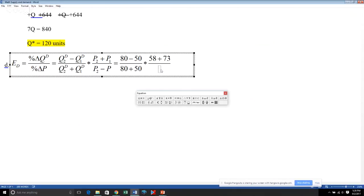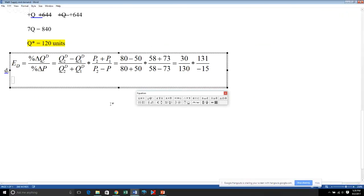Now let's grab a multiplication symbol and set up our next factors. P2 plus P1 is 58 plus 73. P2 minus P1 is 58 minus 73. So let's get those plugged in there: 58 plus 73 divided by 58 minus 73. Now we need to take a couple of steps to simplify this one step at a time. 80 minus 50 equals 30, 80 plus 50 equals 130, then 58 plus 73 is 131, and 58 minus 73 is negative 15.